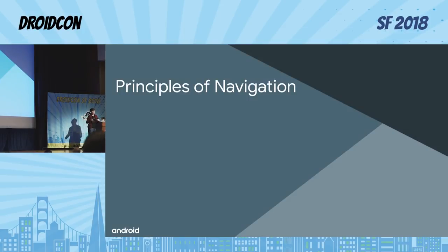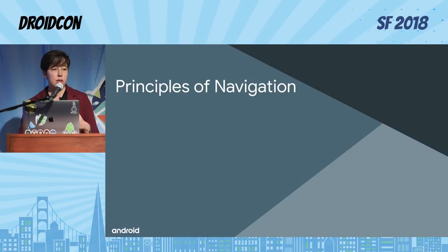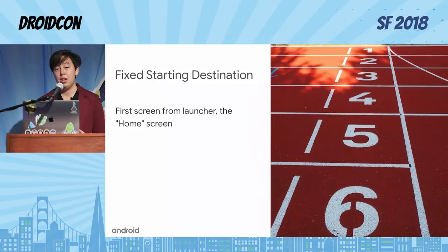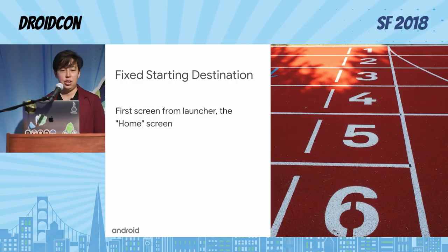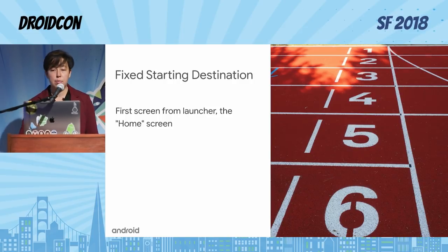Because of this, the first thing we did was talk about what are the principles of navigation that the navigation component is going to follow, and just sort of publish those externally and say what the material design and the team's ideas about navigation are. I'm going to go through those principles right now. The first one is that you should have a fixed starting destination. This is the screen that will launch when you click on the icon for your app, and it should be thought of as the home screen for your app.